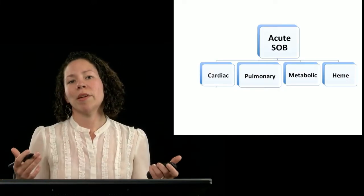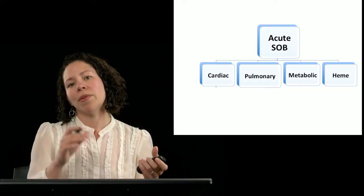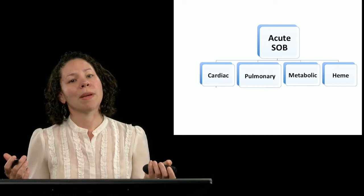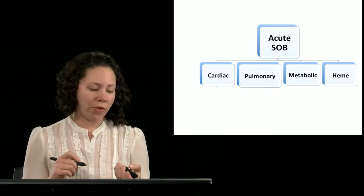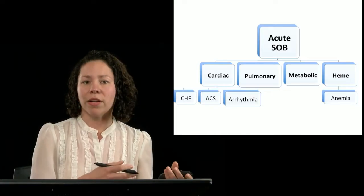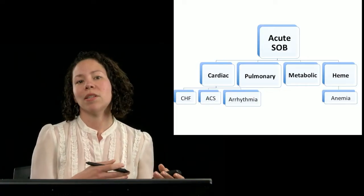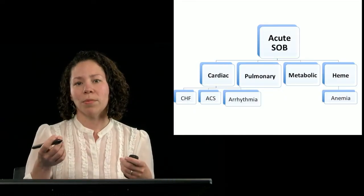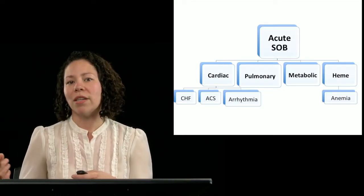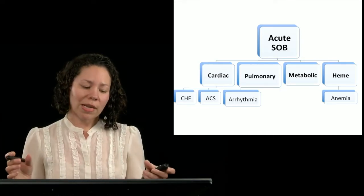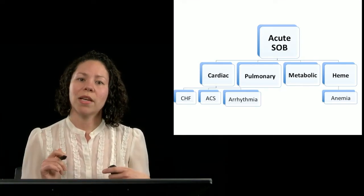Or maybe my schema is even a little bit more elaborate. And under some of those buckets, I've developed some subcategories. Those subcategories might be specific diagnoses. So for like cardiac and heme, perhaps I think heart failure, CHF, or acute coronary syndrome, or arrhythmia are common causes for cardiac shortness of breath. And for hematologic causes, maybe I only have one idea and that's anemia. So those are examples of diagnoses that fit in those buckets.